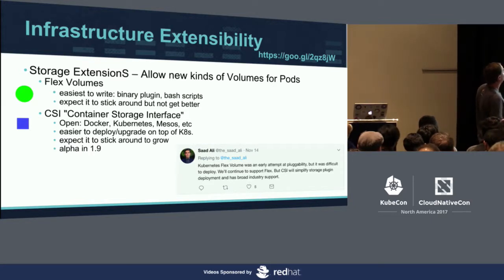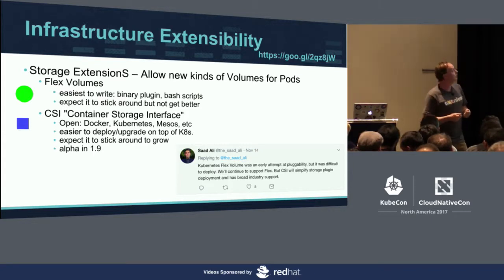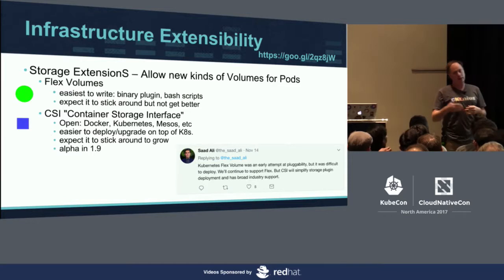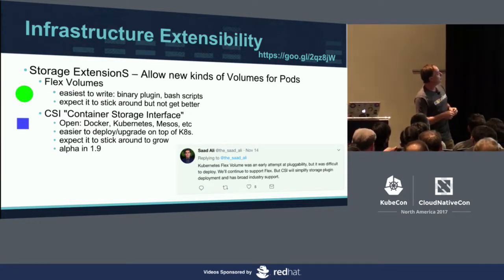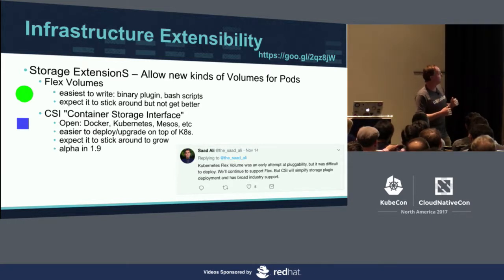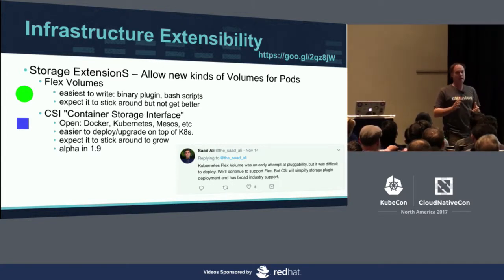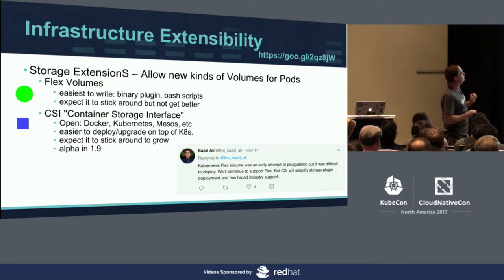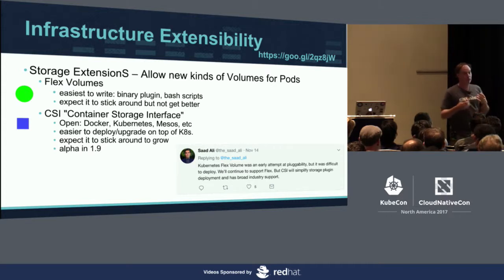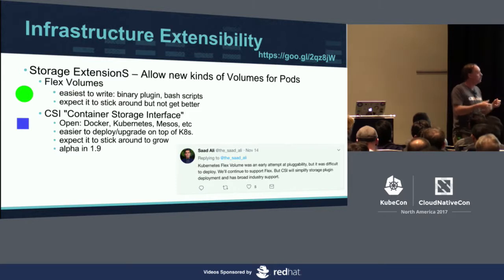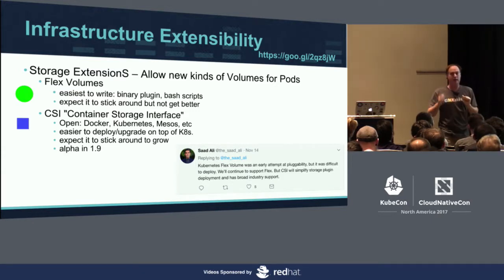There are actually two different mechanisms. Flex volumes came first — these are super easy to write. A plugin means a binary that gets called out by the Kubelet or another component of the Kubernetes system. Someone wrote one in bash with about 100 lines including a really long copyright header. Flex volume support will stick around indefinitely, but it won't get better. The new thing that just came out in 1.9 is called Container Storage Interface (CSI). It's really open — Docker, Mesos, and Kubernetes all support this type of plugin. Instead of having to go into your node file system to upgrade a bash script, you can deploy CSI plugins as a daemon set, which is really cool. I'd expect this one to stick around and grow — it's alpha in 1.9.